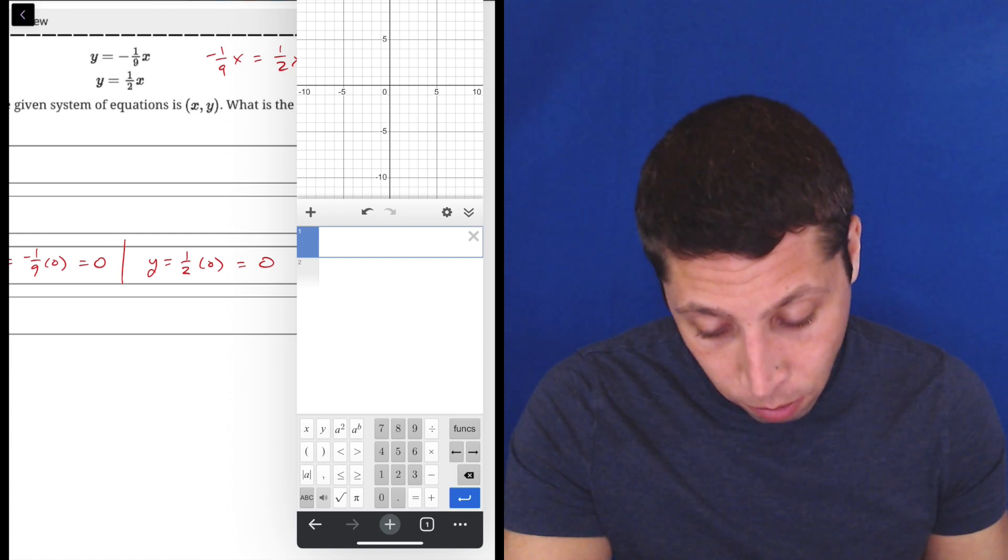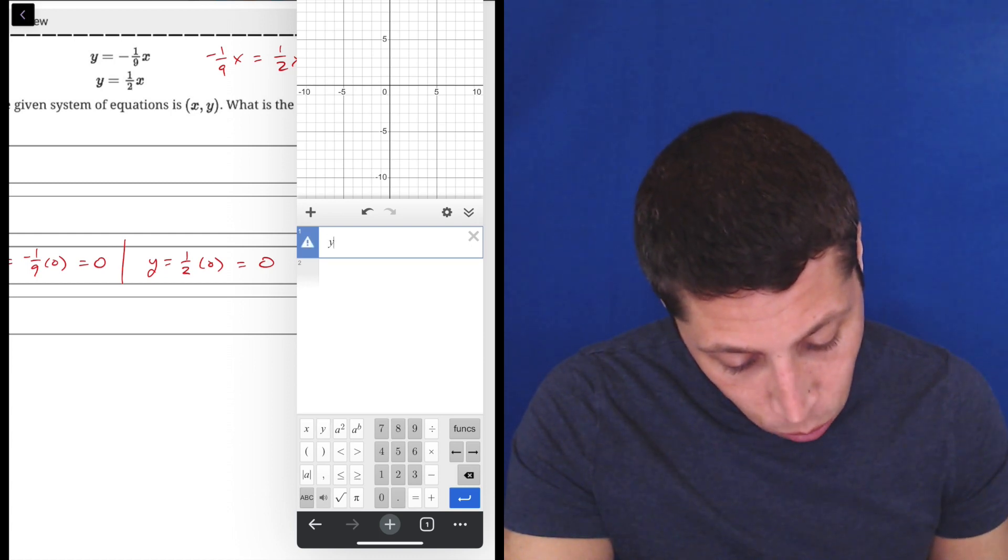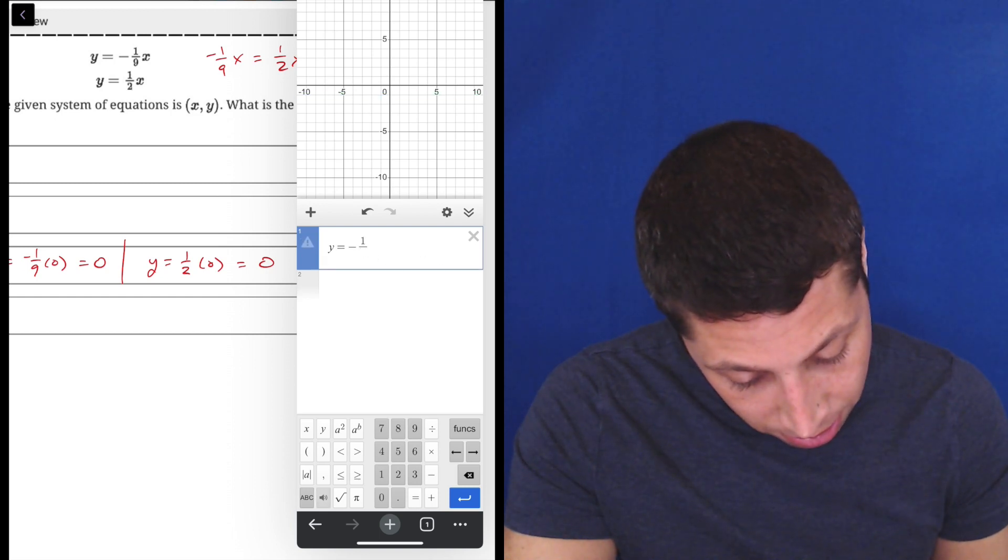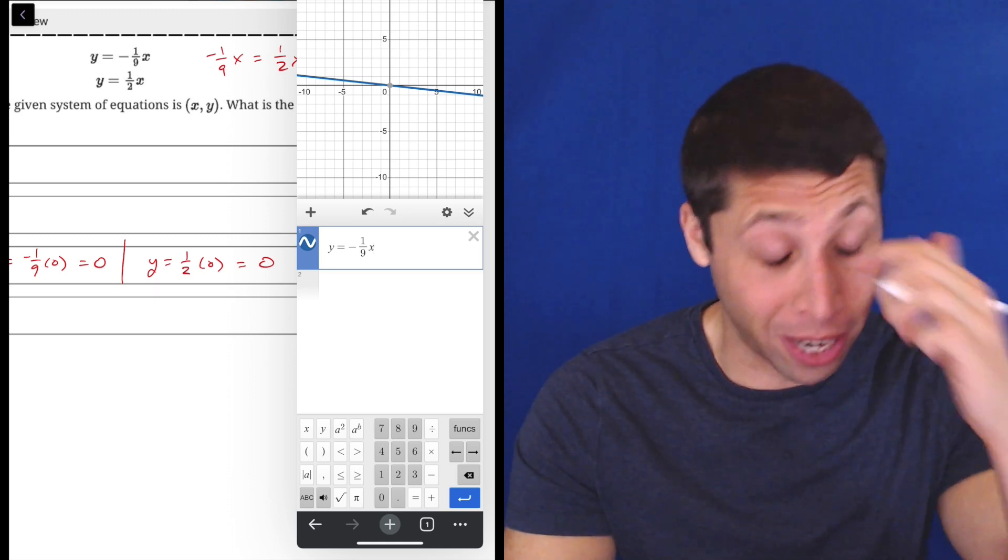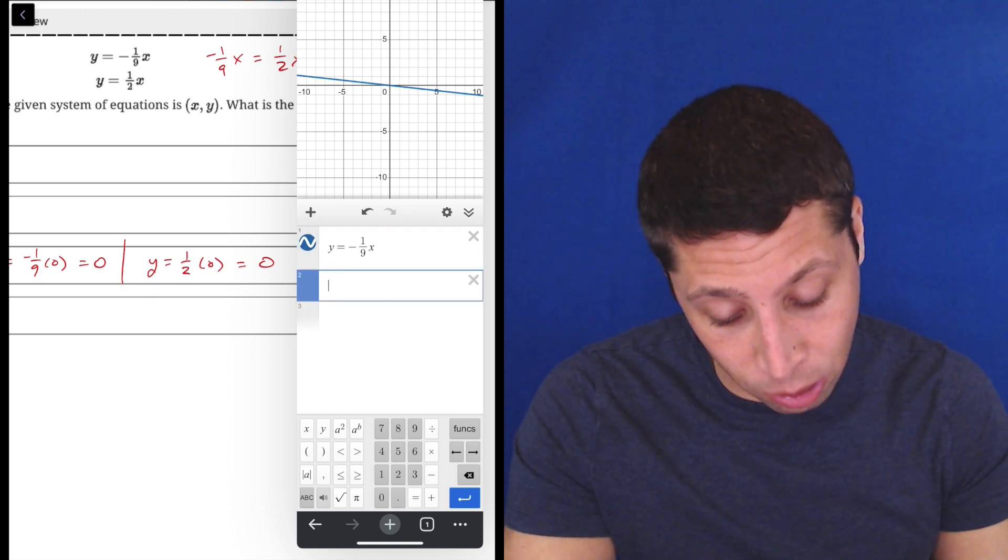So we got to be really careful. So y is equal to negative one ninth, and then we got to tap out there, and so on my tablet, it's kind of annoying, but there it is, negative one ninth x, so that's one equation.